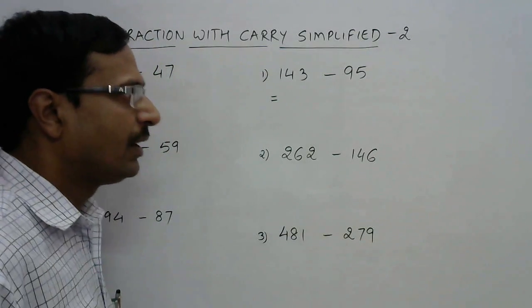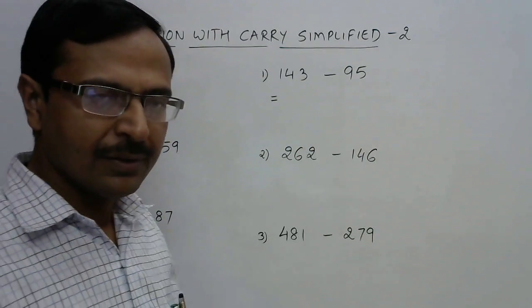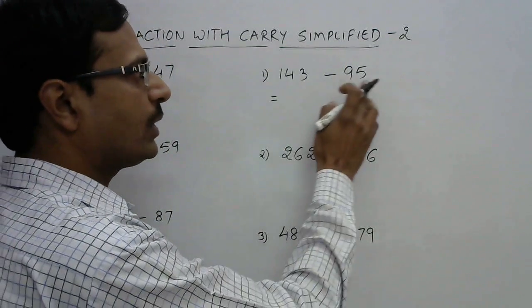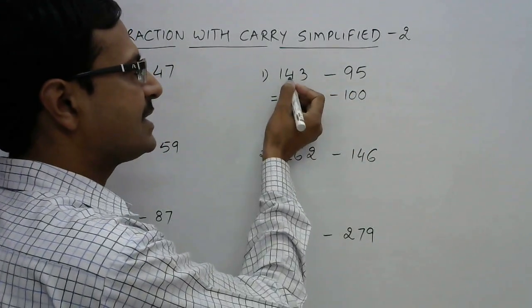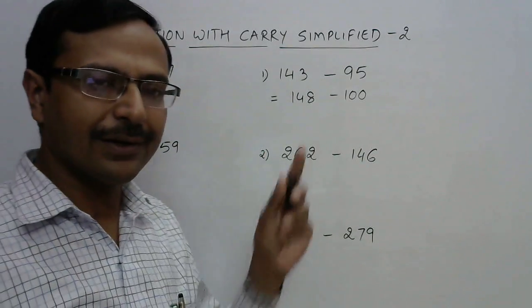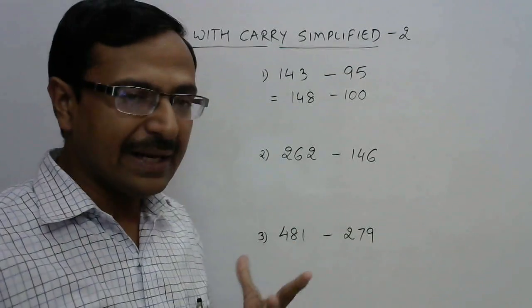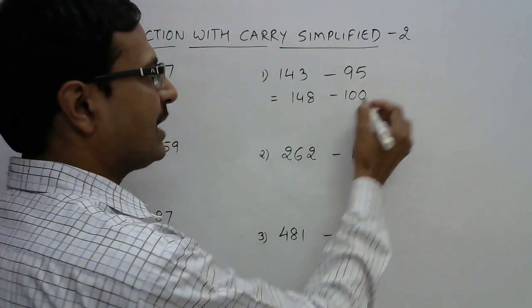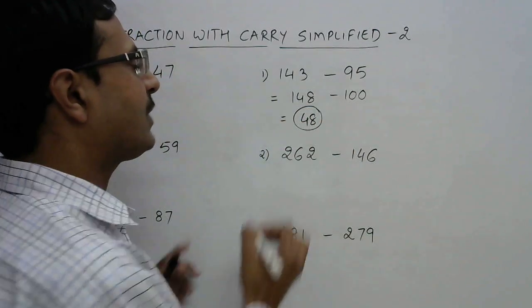Now see, 95 is very close to 100, it is just 5 less than 100. So what you do is increase both the quantities by 5 so that this becomes 100. And if you increase this by 5, this is 148. And now subtracting 148 and 100 is very easy because you don't need to write the numbers one below the other.